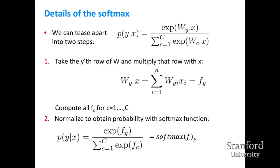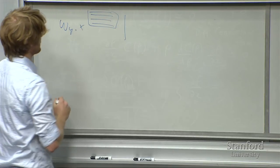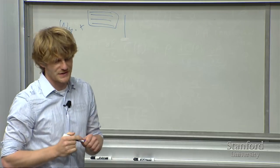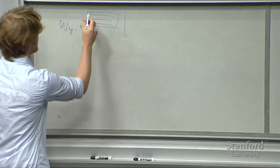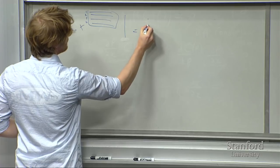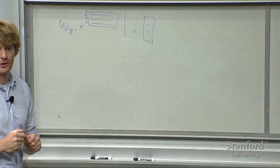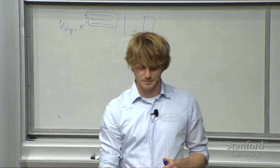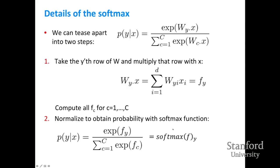Let's carefully define the softmax. We compute this probability of y given x in two steps. First, we take the y-th row of W and multiply it with x — notation W_y dot times x. If we do that for all classes c from one to C, we get un-normalized scores. Then we pipe this vector through the softmax to compute a probability distribution that sums to one.